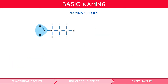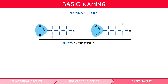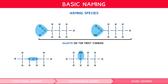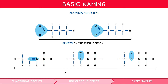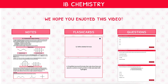Whilst the carboxyl and carbonyl groups must always be on the first carbon within a carboxylic acid and aldehyde, this is not always the case for the alkenyl group in an alkene, the hydroxyl group in an alcohol, or the carbonyl group in a ketone. Therefore, we should always indicate the carbon on which it is found by adding a number to the suffix. You've now reached the end of the preview for this IB science video. If you want to check out the full video, head over to our website and select a membership plan today.